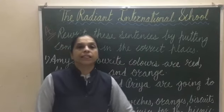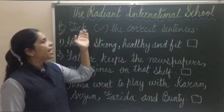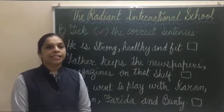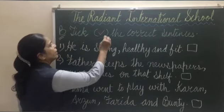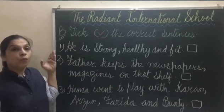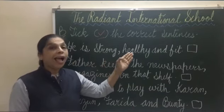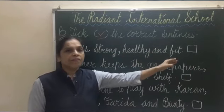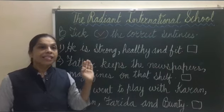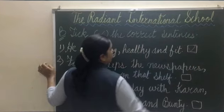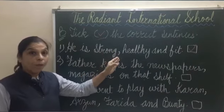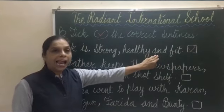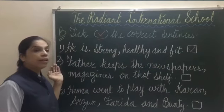Now Exercise B: Tick the correct sentences. In this exercise, whichever sentence is correct, you have to put a tick. Number one: He is strong, healthy, and fit. Is this sentence correct? Yes, this sentence is correct because strong, healthy — and fit is the last item, so 'and' is written. This sentence is correct.